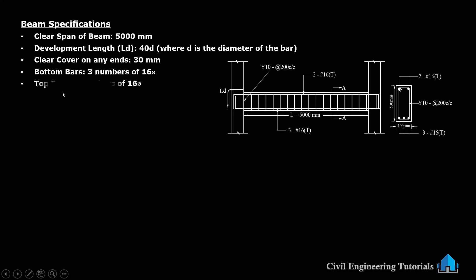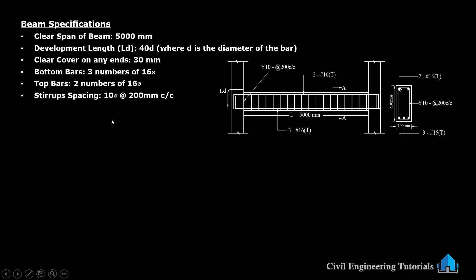And top bars: 2 numbers of 16 mm diameter. Here also you can see. Now, stirrup spacing: 10 mm diameter at 200 mm center to center. You can see the stirrup here — 10 dia at 200 mm center to center.